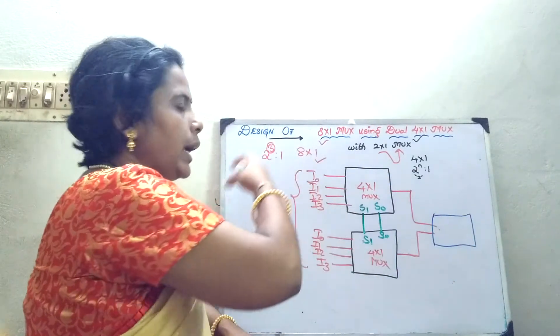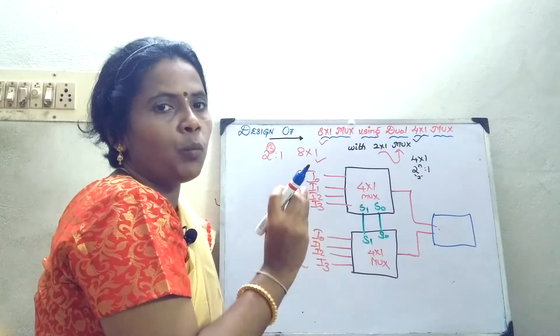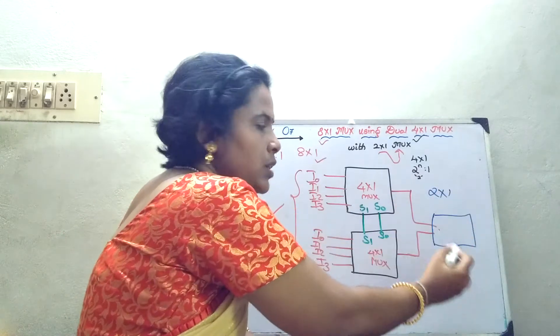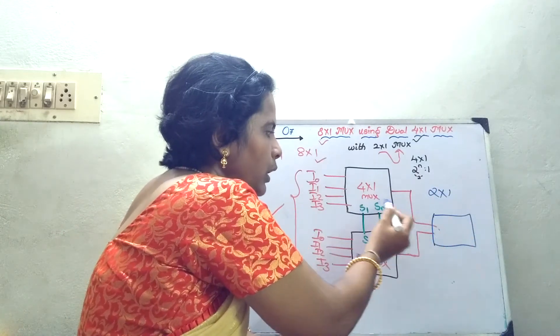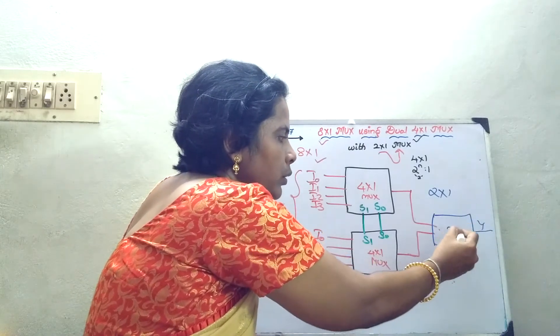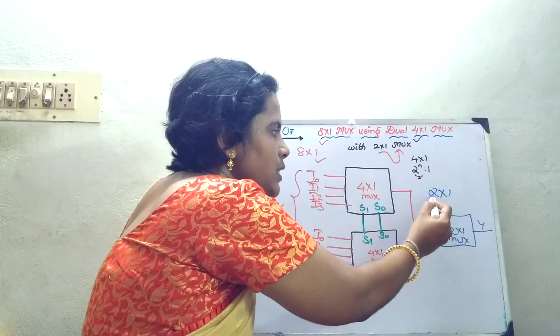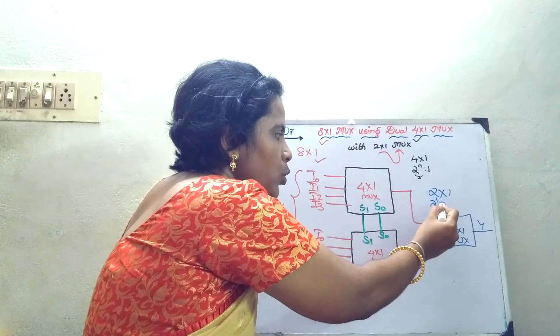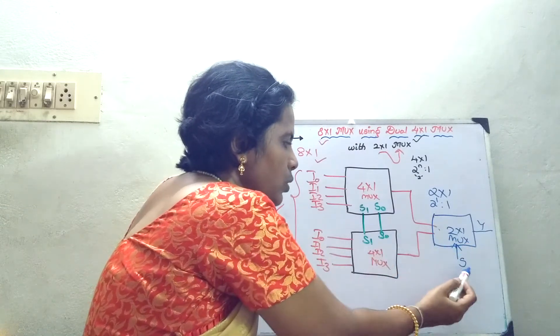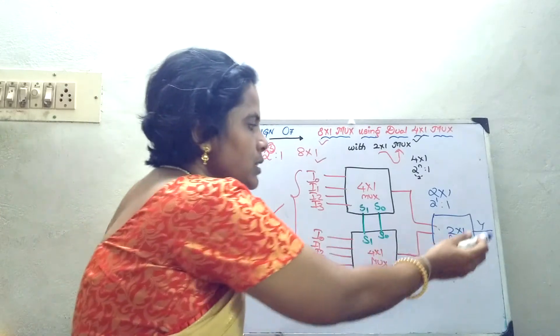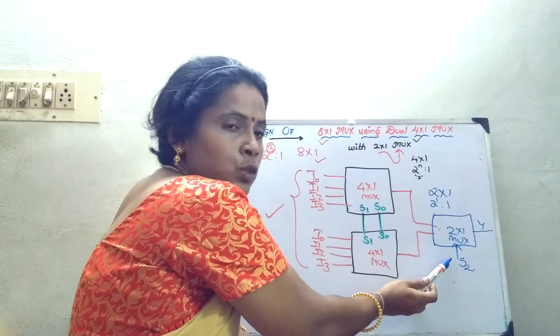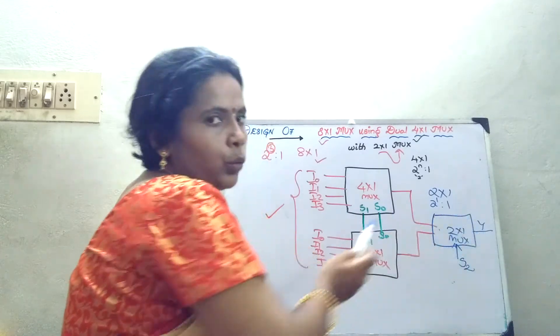Before going into the entire concept, we will just concentrate on the module of 2 cross 1 mux. How many inputs should be there? 2 cross 1 mux means 2 inputs which will come from either of the 4 cross 1 mux and you will have 1 output. How many select lines? 2 power n is to 1. So 2 power 1 is to 1. So 1 select line. Already I have written S naught, S1. So this is select line. Now this completes the module of your 2 cross 1 mux. It has 2 inputs, it has 1 select line and 1 output.